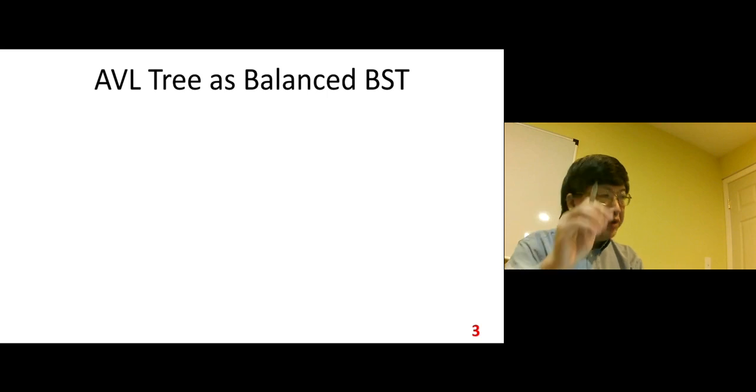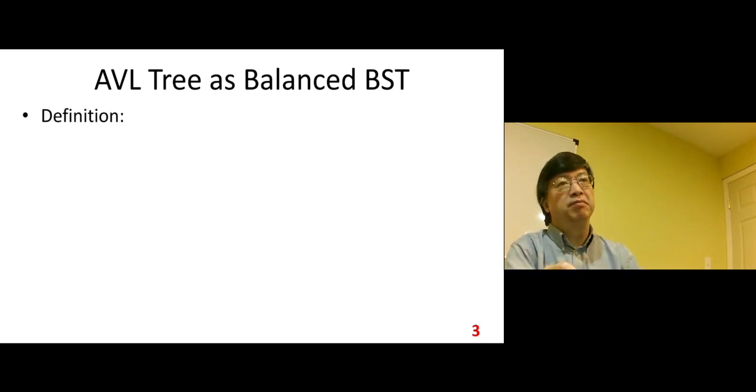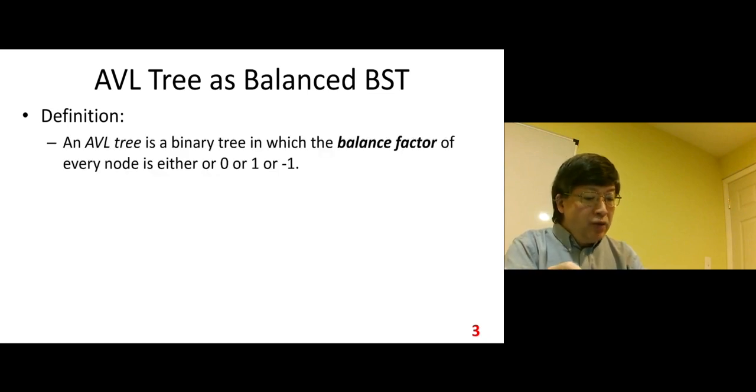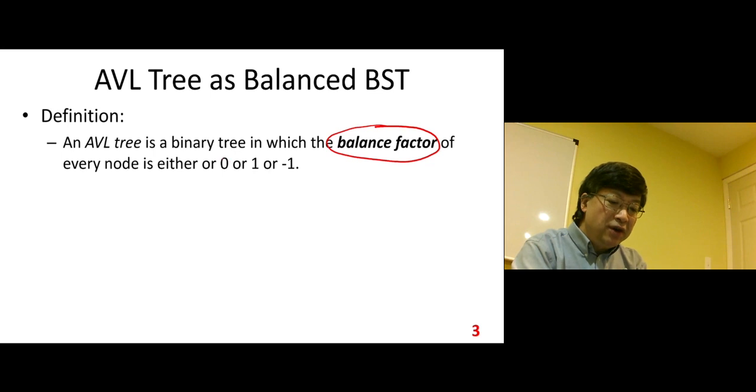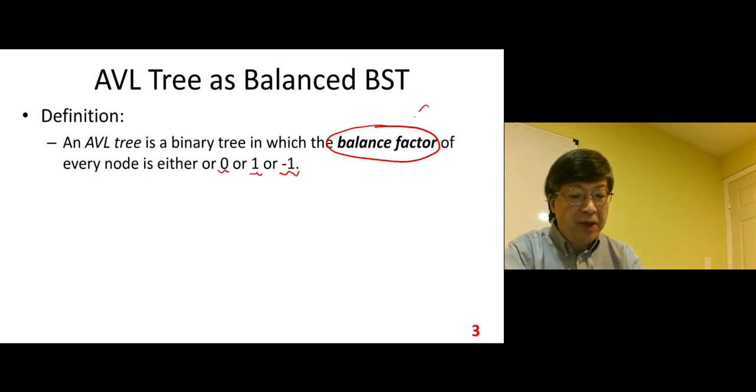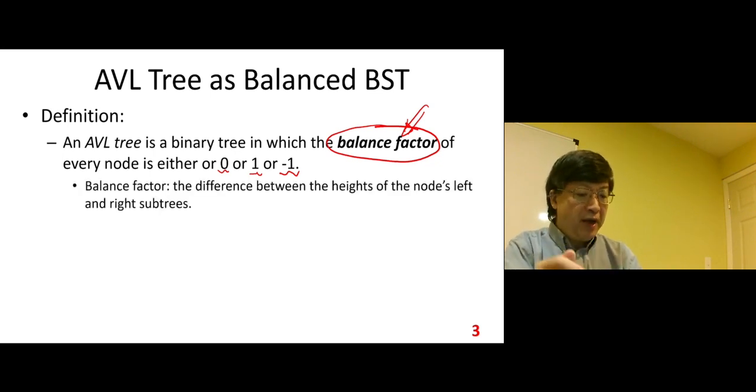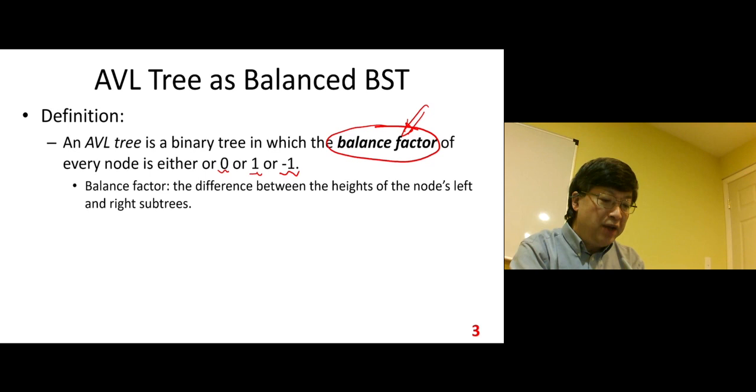Let's look at the definition of this AVL tree. An AVL tree is a binary tree in which the balance factor of every node is either 0, 1, or negative 1. We use this concept to control balance property. The balance factor is the difference between the heights of the node's left and right subtrees.